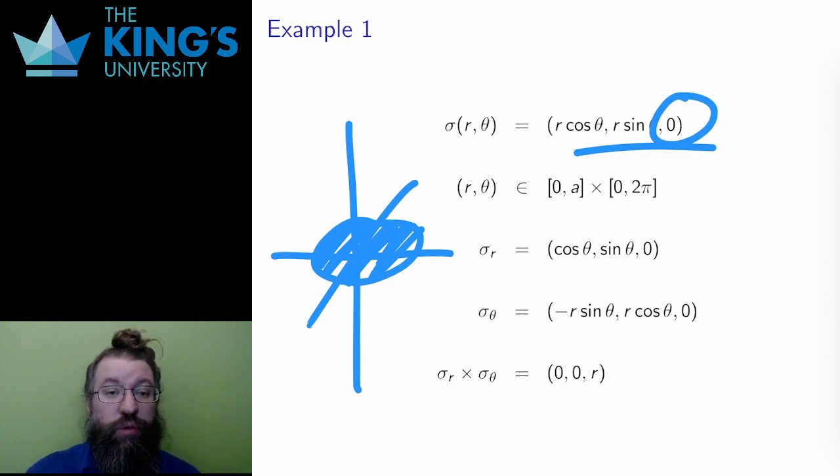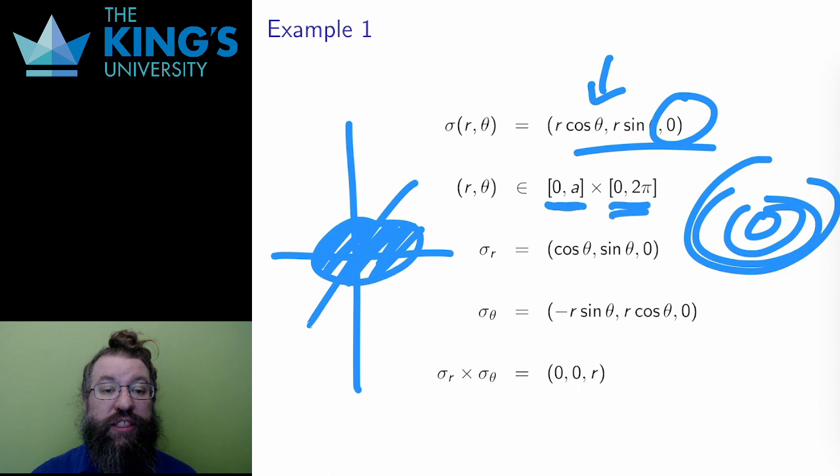This is a description of a circle of radius r, and if I let the radius go from 0 to a, which is all radii up to a, and I let the angle go all the way around the circle, the result is all points in a disk, a solid disk of radius a.